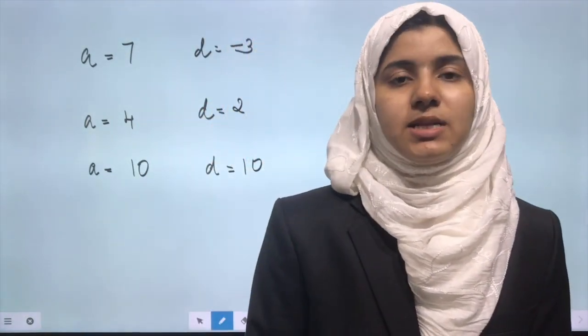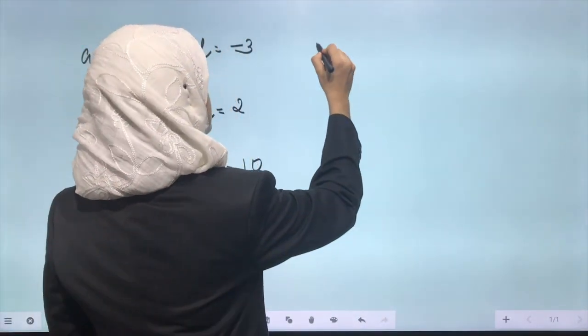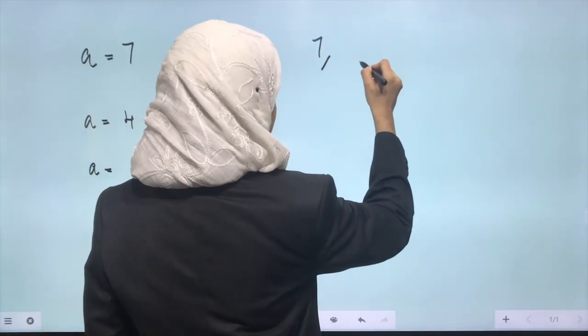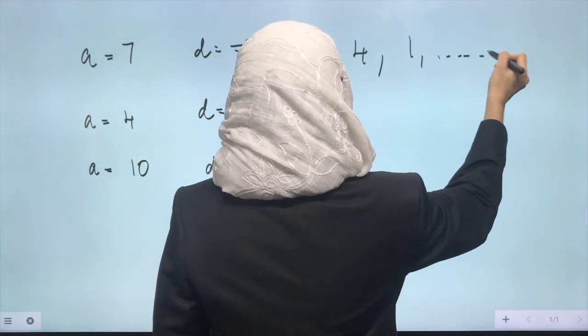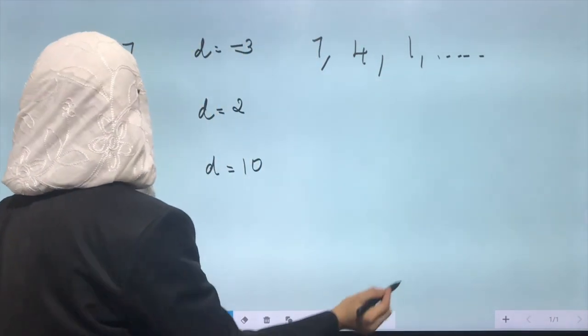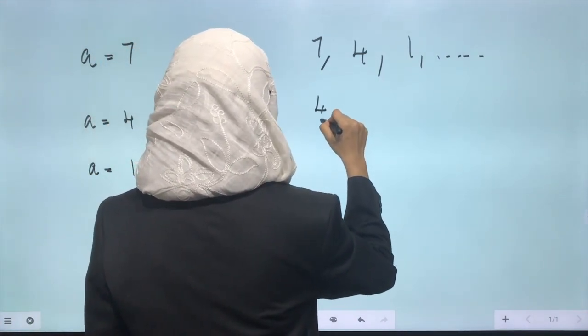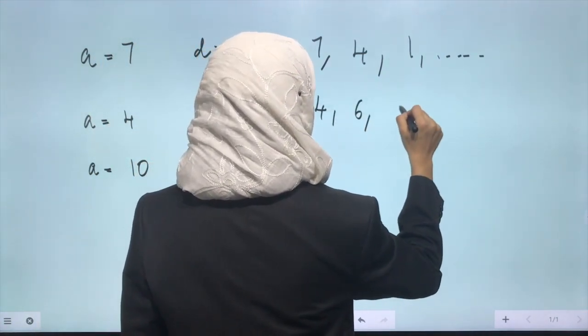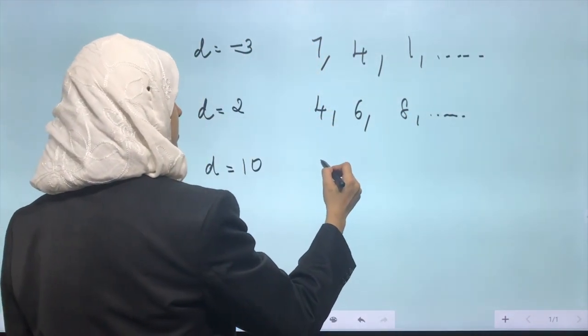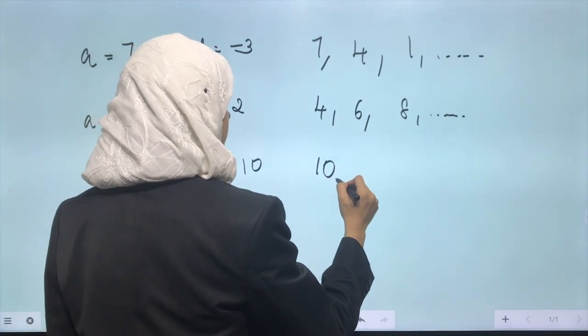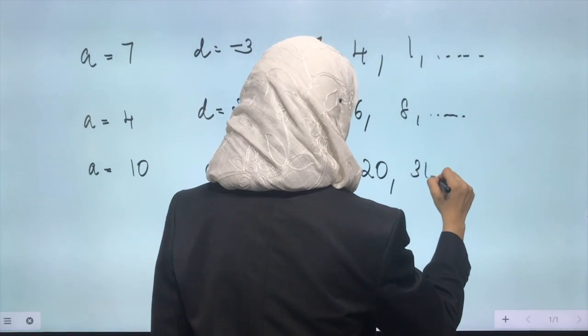So 7, then 7 minus 3 is 4, 4 minus 3 is 1, etc., if it's an infinite AP. Then second AP: 4, 4 plus 2 is 6, 6 plus 2 is 8, etc. Then third one: a is 10, so first term is 10, plus 10 is 20, 20 plus 10 is 30, and it goes on with the infinite AP.